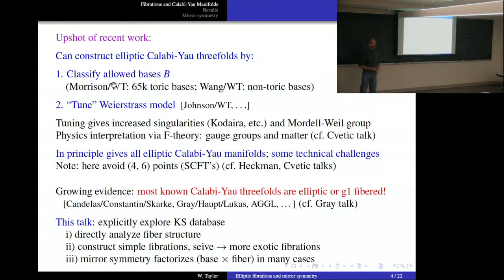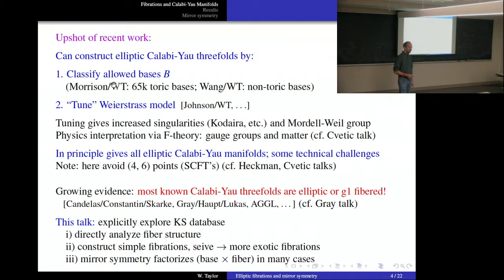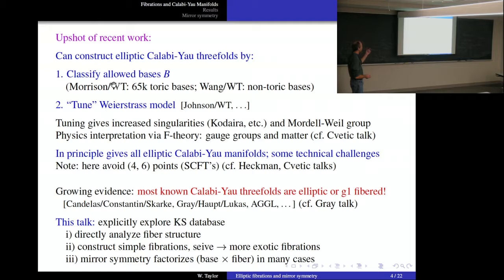Question: Do you suggest the mirror of an elliptic Calabi-Yau threefold is also elliptic? In many cases I believe it is. There are certainly counterexamples — the mirror of the quintic is elliptically fibered but the quintic is not. Surprisingly many things in the Kreuzer-Skarke database exhibit a structure where the mirror symmetry naturally factorizes. There's old work by Berger and collaborators on mirrors, but what I'm bringing in here is fairly new — we've just found this in the last few weeks. If anyone in the audience knows about prior work on this, please let me know.